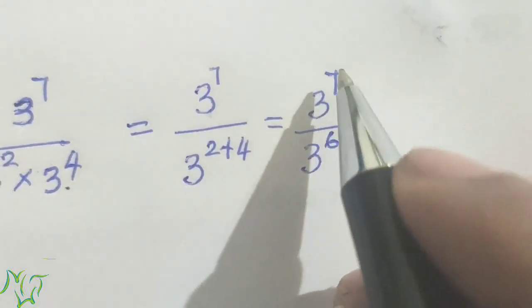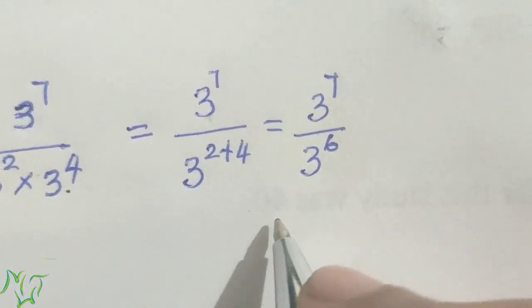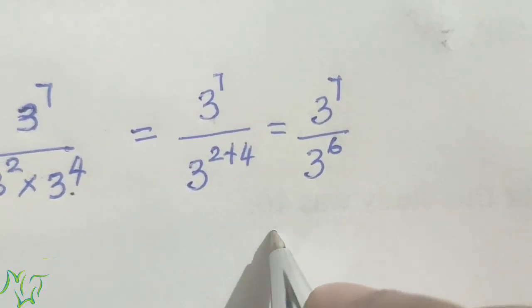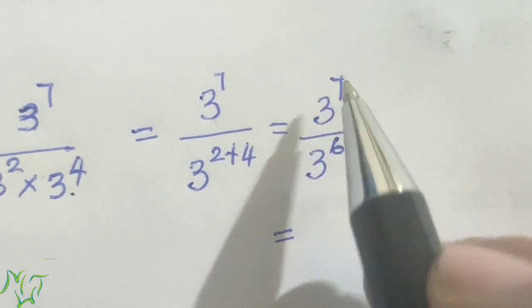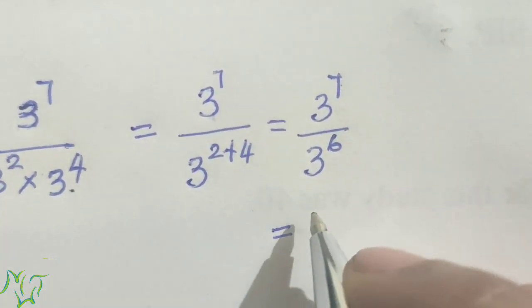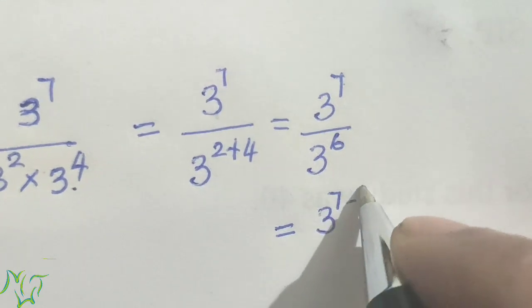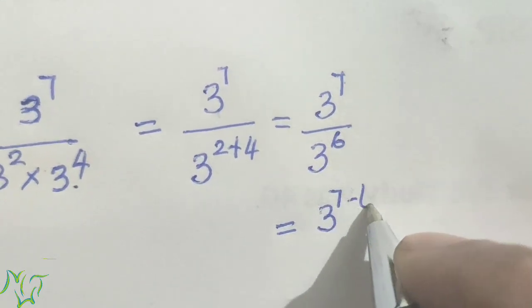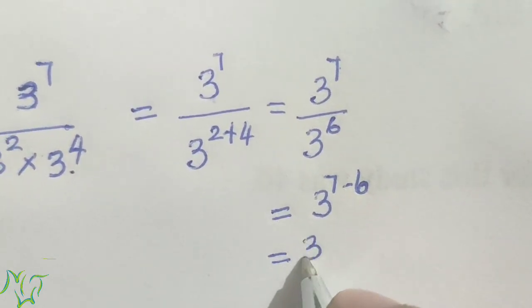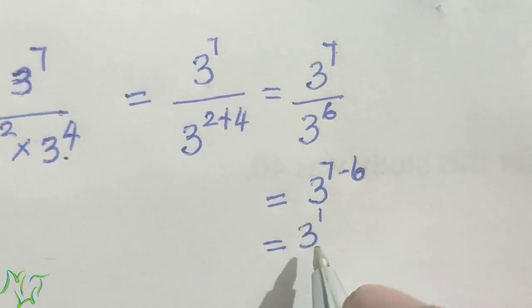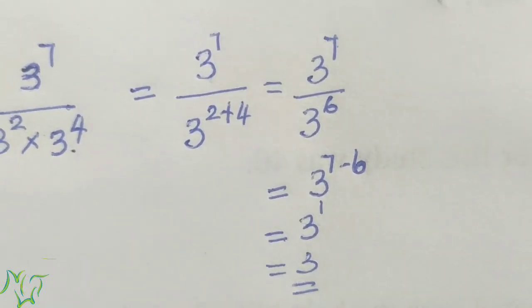Now we can use the division rule. The power in the denominator is bigger, so we use the first rule: 3 raised to 7 minus 6, which equals 3 raised to 1. So that is equal to 3 itself.